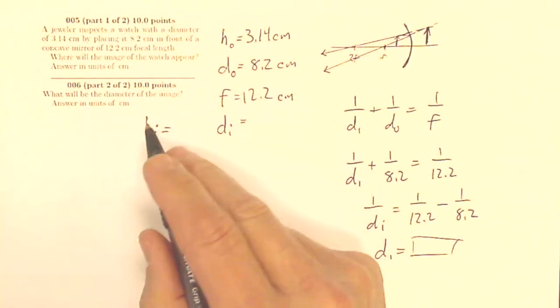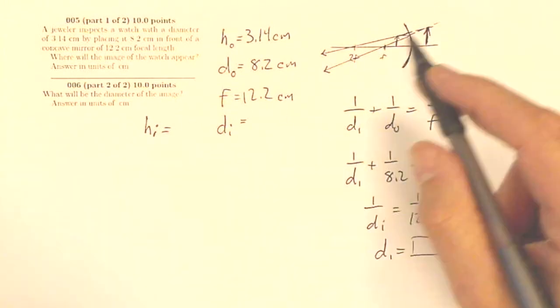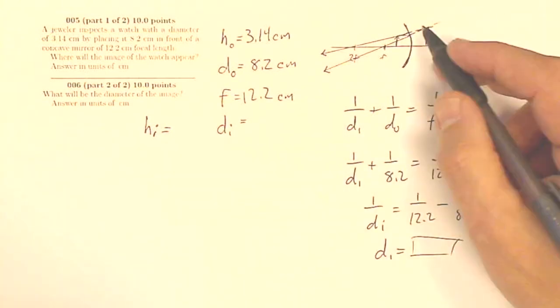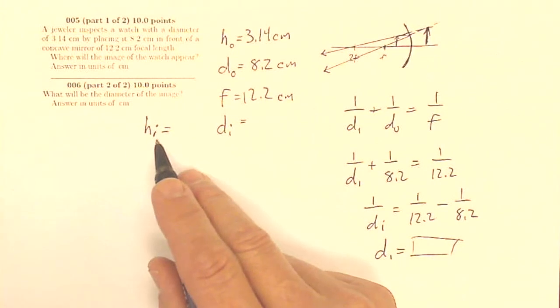But hi is going to be a positive number, so I don't have to worry about flipping it negative-positive. But diameter of an image would be positive because that's not saying it's up or down. It's just how big is it in general. So hi is what I'm looking for.